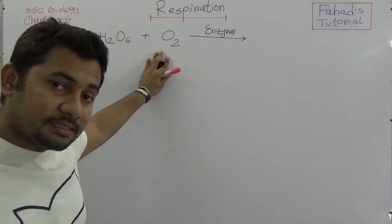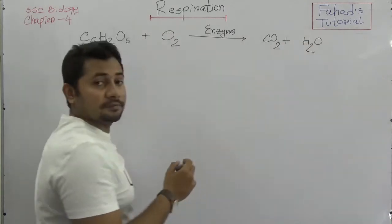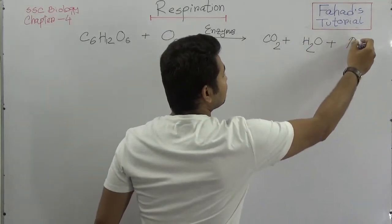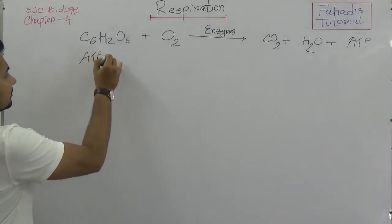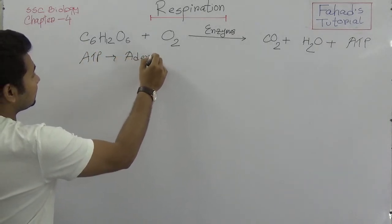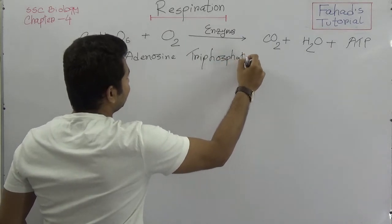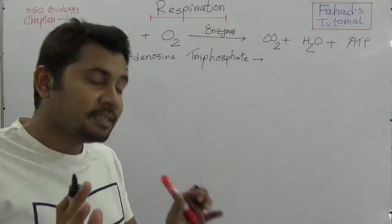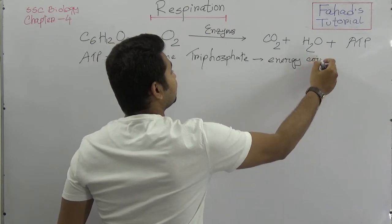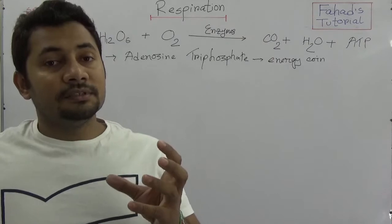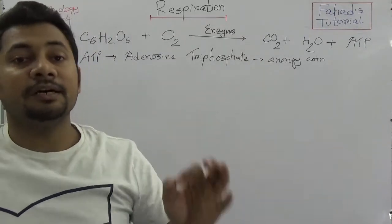This glucose will be oxidized and will produce carbon dioxide and water, and most importantly it will produce ATP — adenosine triphosphate. You must know the abbreviation ATP stands for adenosine triphosphate. It is called the biological coin, the energy coin. All the energy is stored as units of ATP, and ATP can release this energy when required.